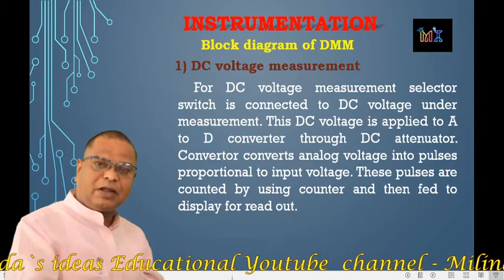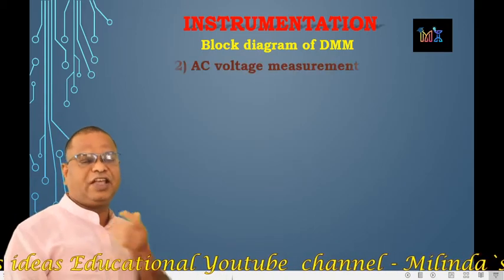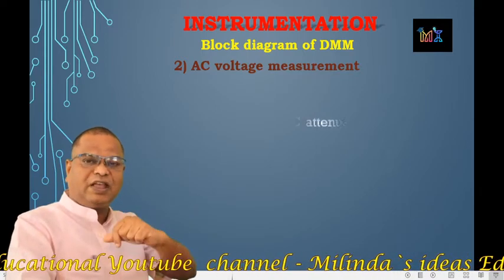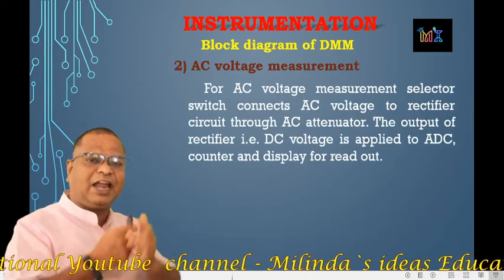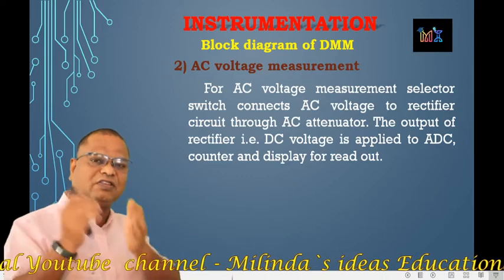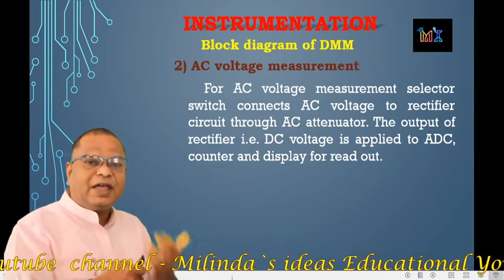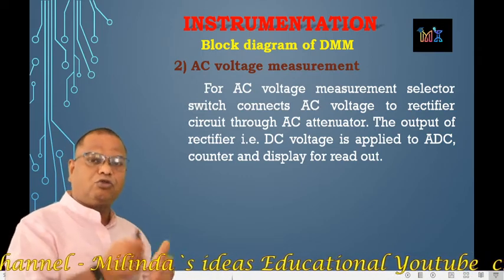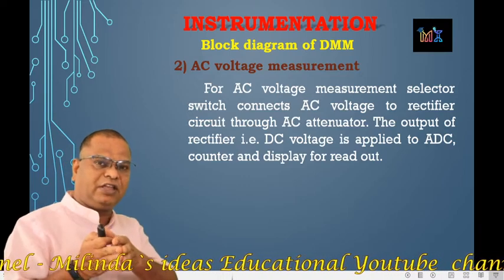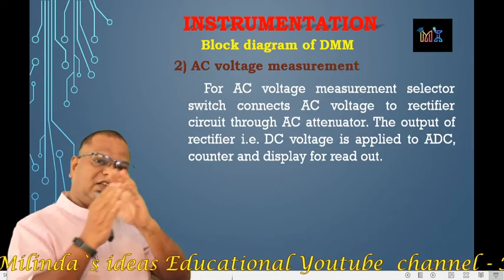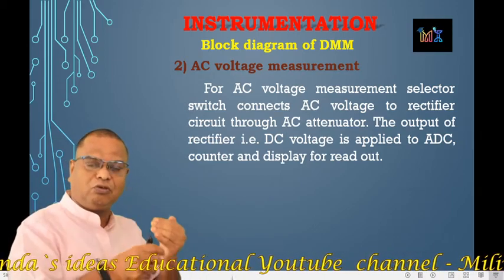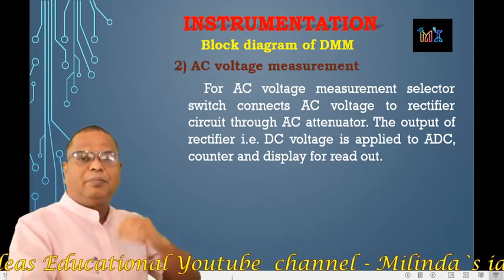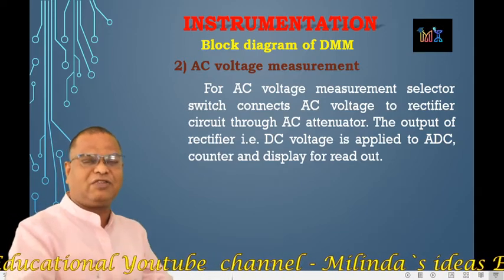When measuring AC voltage, the selector knob should be kept on AC mode. The AC signal is applied to the AC attenuator, and through the AC attenuator it is connected to the rectifier. The rectifier is used because the A to D converter requires a DC signal — so the rectifier converts the AC voltage into DC voltage. In this case, mostly a bridge rectifier or center-tap rectifier is used, but mostly the bridge rectifier is preferred.